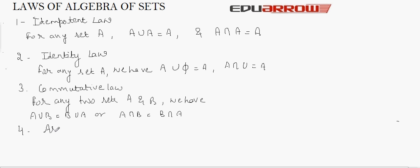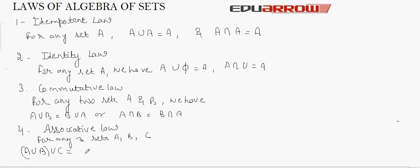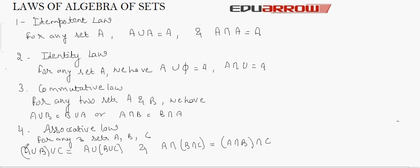The fourth law is the Associative law. This law says that for any three sets A, B and C, we have A union (B union C) is equal to (A union B) union C, and A intersection (B intersection C) is equal to (A intersection B) intersection C. This means we can perform union or intersection on any two sets first, then apply the operation with the third set, and the result will be the same.